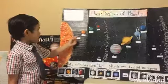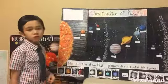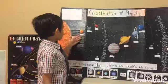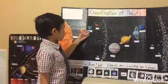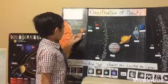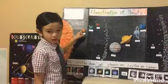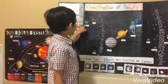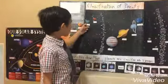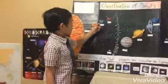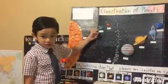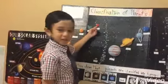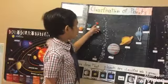Mercury has 70% metal and solid rock. Venus has the same mass and composition of Earth, but a long time ago they had water, but it's all gone. Earth has 71% water and 29% land, and has nitrogen and oxygen. Mars has iron dust and solid red rocks.